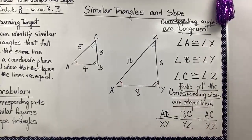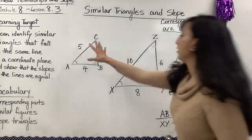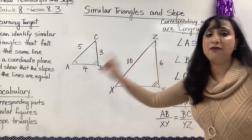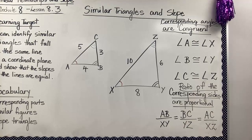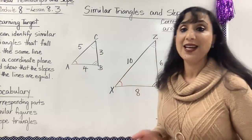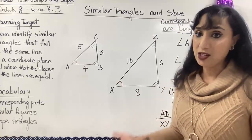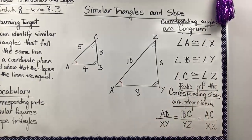The two triangles shown are similar. The sides of the smaller triangle are half the length of the larger triangle: 5 is half of 10, 4 is half of 8, and 3 is half of 6. So the ratios of the corresponding sides are the same — 5/10 = 4/8 = 3/6 = one half.